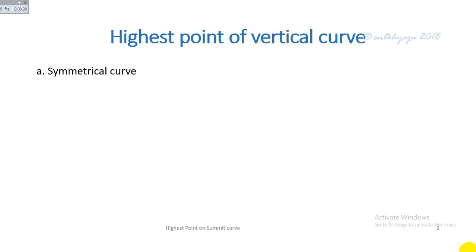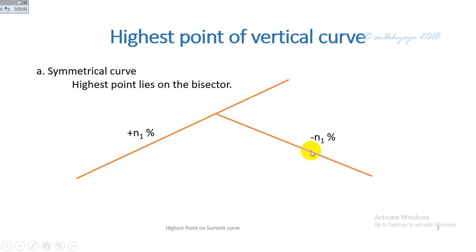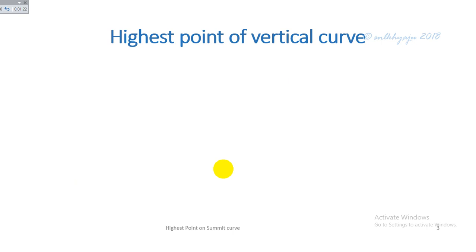Highest point on a vertical curve — that is the summit curve. There are two types: the symmetrical curve and the asymmetrical curve. In the symmetrical curve, if the ascending gradient equals the descending gradient in magnitude, the highest point lies on the angle bisector of the point of vertical intersection. The bisector line intersects the curve at that point, which is the highest point on the summit curve.